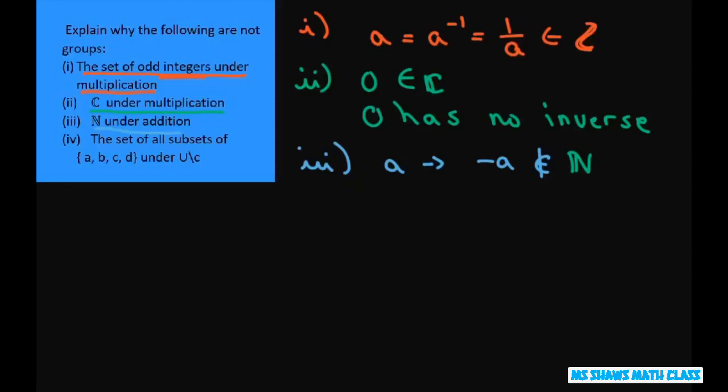And for the set of all subsets A, B, C, D under the universal set take away C. The universal set take away C means our identity is the empty set. But there's no inverse possible.